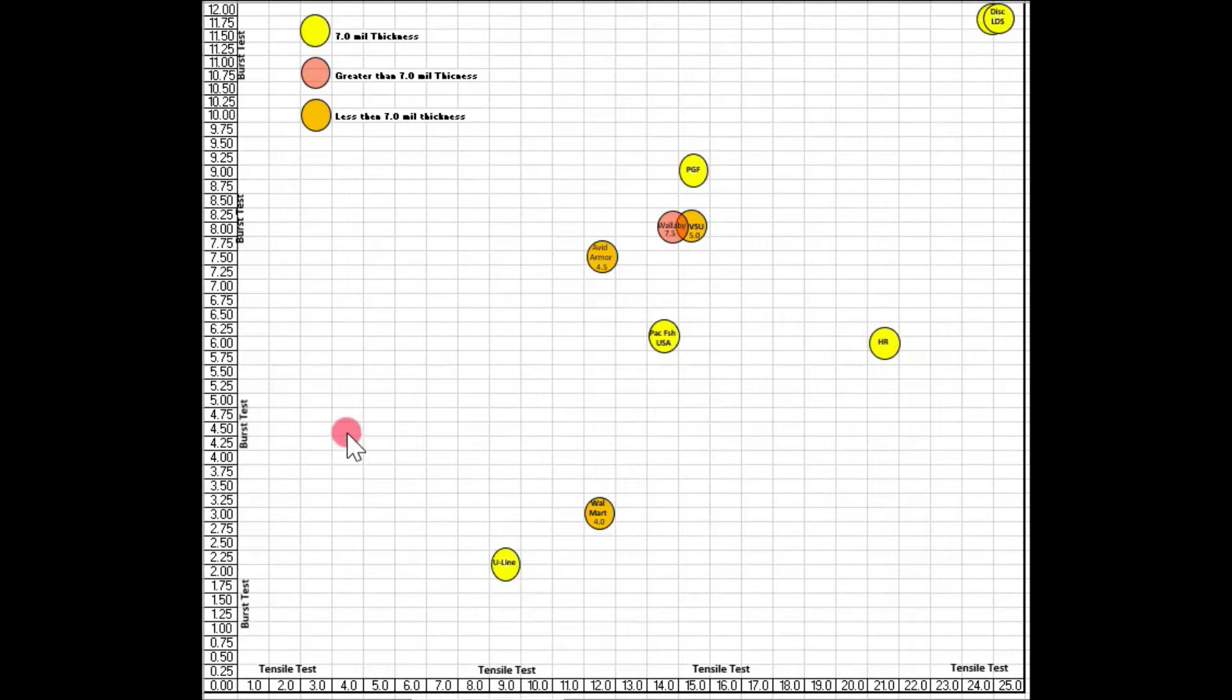On the burst and tensile test, we got burst going along this axis, and we have tensile going along this axis. Avid Armor is right here, pretty much in the middle of the group. They didn't do too bad. And to give you an idea what the different colors mean, yellow are manufacturers of a 7 mil thickness. The red colors are greater than 7 mil, and the orange color are less than 7 mil. So we have Avid Armor being here at 4.5. That's why they're an orange color.